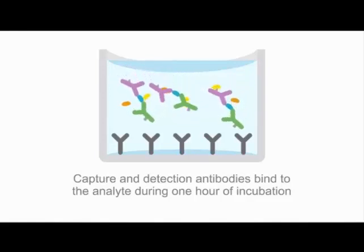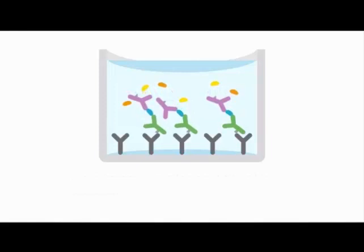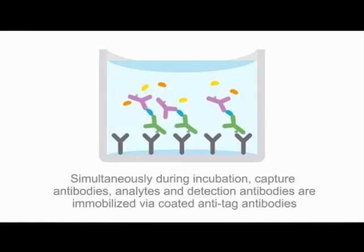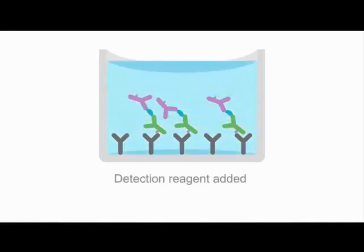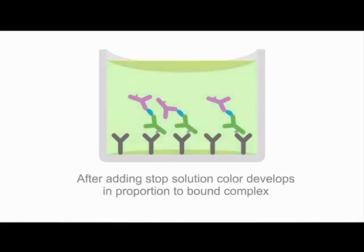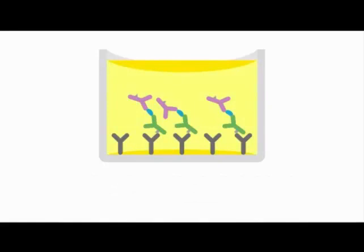During this incubation step, the antibodies bind to the target protein, and simultaneously the sandwich complex is bound to the Simple Step microtiter plate. Following the one-hour incubation, a single wash step removes the unbound analyte sample and antibody cocktail, leaving behind only the immobilized sandwich complex. Next, a detection reagent, also known as TMB, is added to every well and incubated for 10 minutes. Following the incubation, a stop solution is added to every well where color develops in proportion to the bound sandwich complex. The Simple Step ELISA is then read on a standard microplate spectrophotometer at a 450 nanometer wavelength.